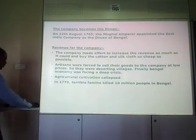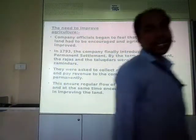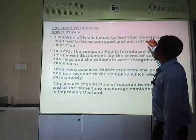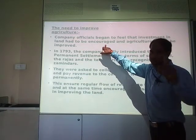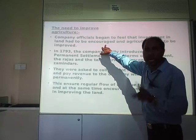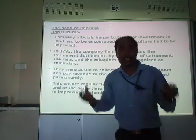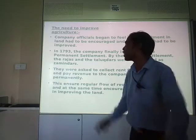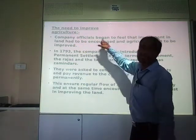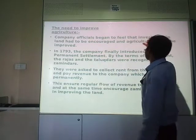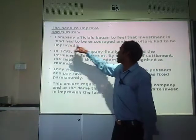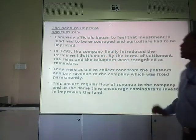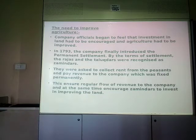Now, what was the strategy of the British? The company officials began to feel that investment in land had to be encouraged. They started thinking that investment in land should be made to flourish agriculture so that revenue could come. Since artisans were already fleeing, agriculture was the only source of revenue. So in 1793 the company finally introduced the Permanent Settlement.